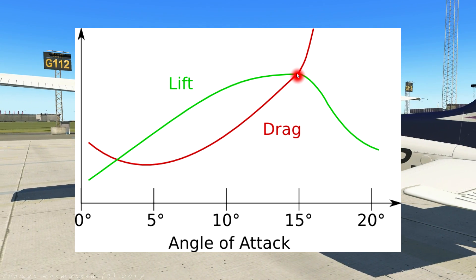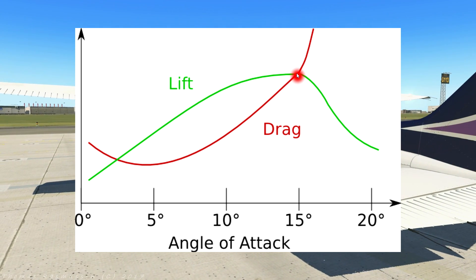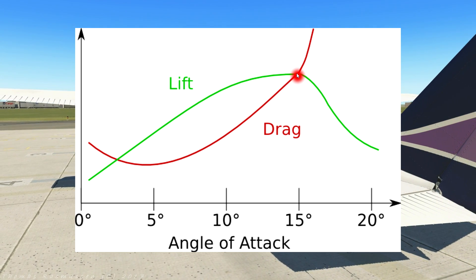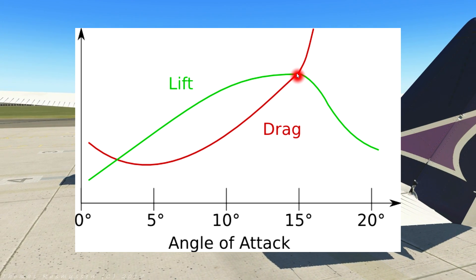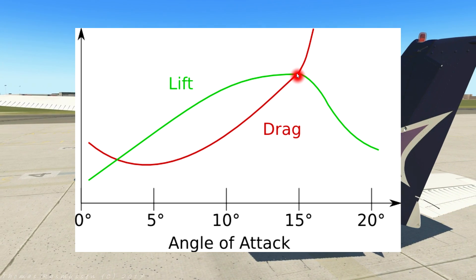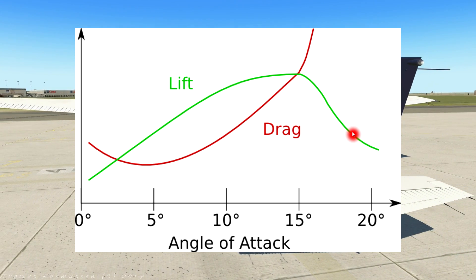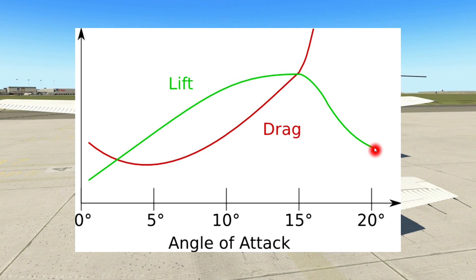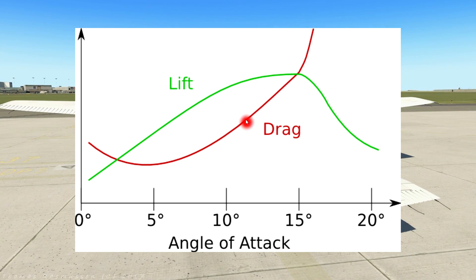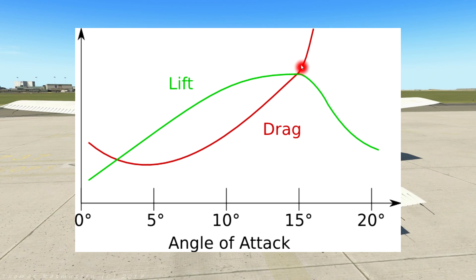For light aircraft like our Cessna 172, the critical angle is typically around 15 or 16 degrees. As the angle of the wing increases, the amount of lift it produces increases up until the critical angle — past that point the amount of lift produced drops off, usually rather steeply. Drag also increases as the angle of attack increases, but it will increase substantially faster after the critical angle.